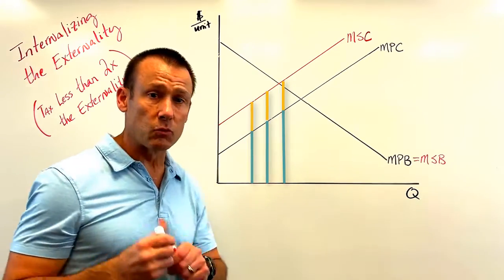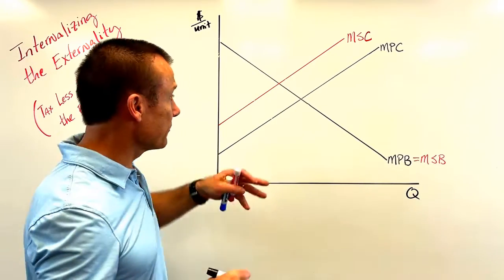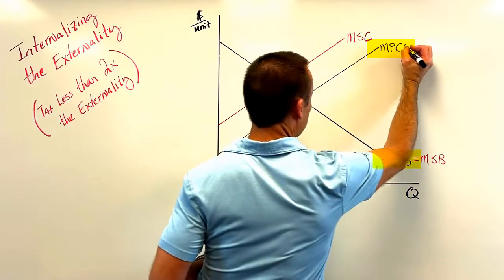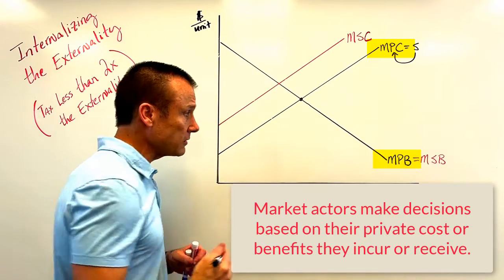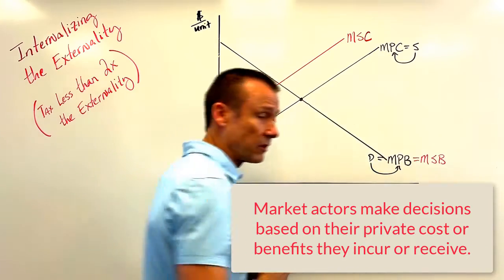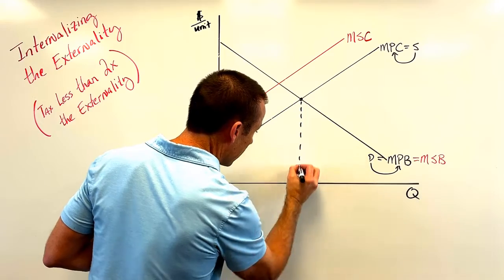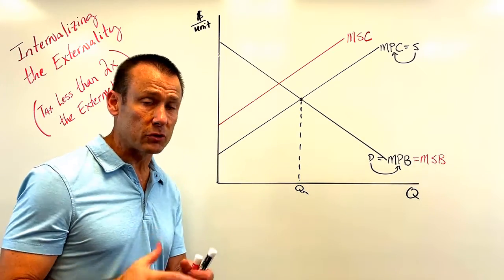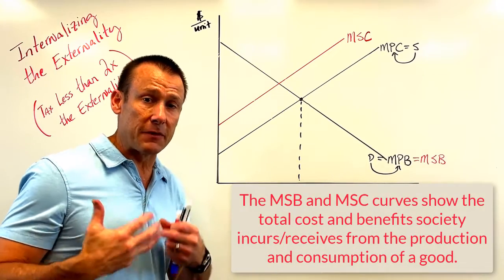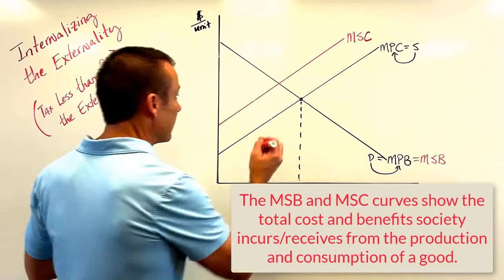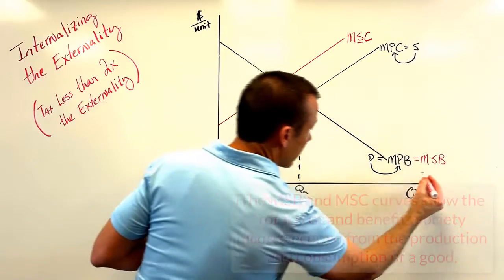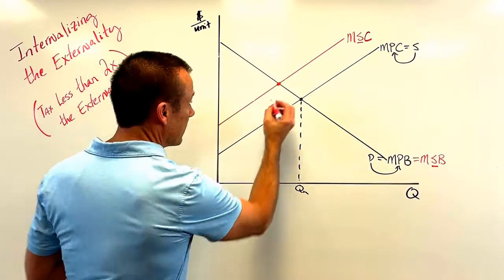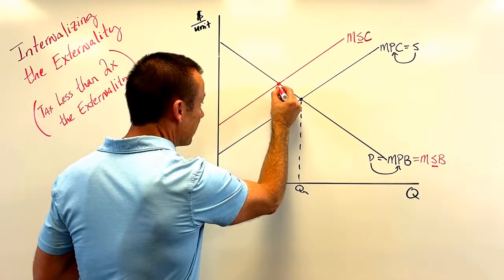One of the first things we want to see is what would the market do left alone — a situation where the externality is not being internalized by the market actors. They would make decisions based on their private cost and private benefit. Suppliers make decisions based on their private cost, and demanders make decisions based on their private benefits. So our market actors would give us a result of Q-market. But Q-optimal — the optimal amount of this good we'd like produced — is found at the intersection of the marginal social cost and marginal social benefit curves.